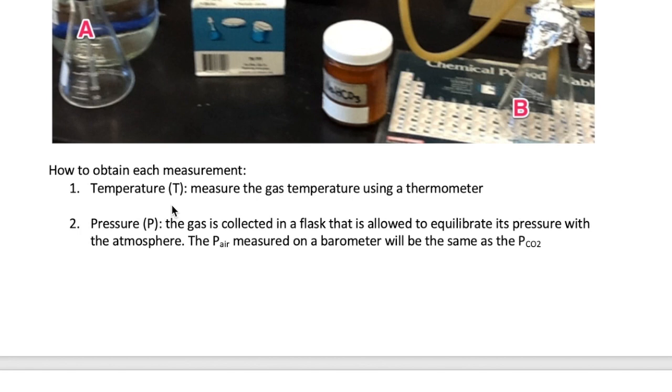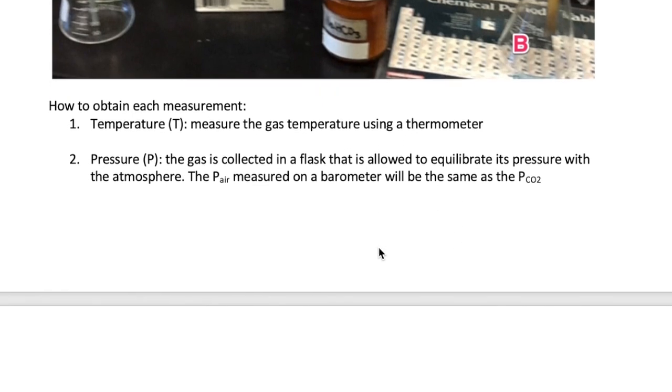To measure the temperature of the CO2, we simply put a thermometer inside flask B when it's full of CO2. To get the pressure of CO2, we can measure the pressure of air in the room. This is because the CO2 in the flask is allowed to equilibrate with air in the room, so the pressure of air is equal to the pressure of CO2. The pressure of air will be measured using a barometer inside the lab.